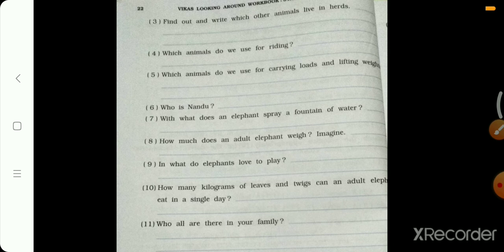Which animals do we use for riding? Chalo, kaunsa animals ka hum as a riding use karte hai? Camel, elephant, horse. Who is Nandu? Nandu kaun hai? Nandu is an elephant, baby elephant. Nandu kaun hai? Ek baby elephant hai.